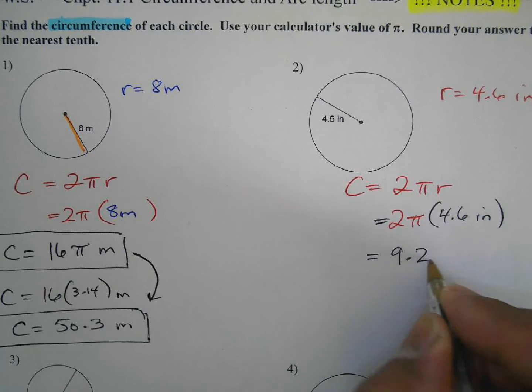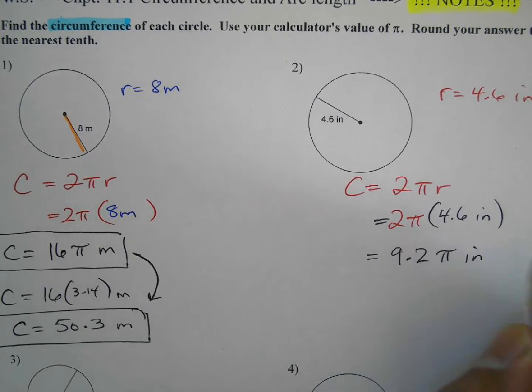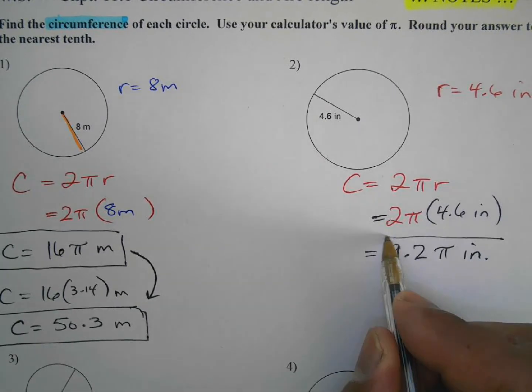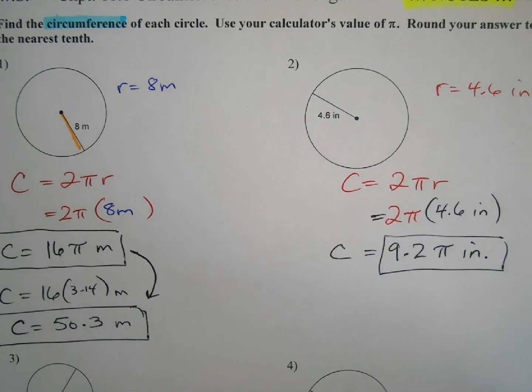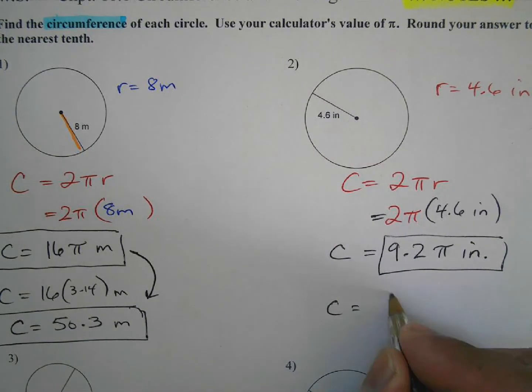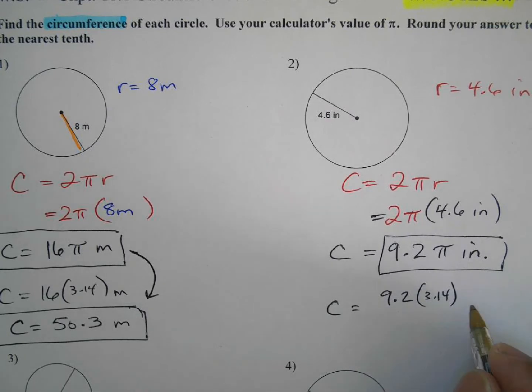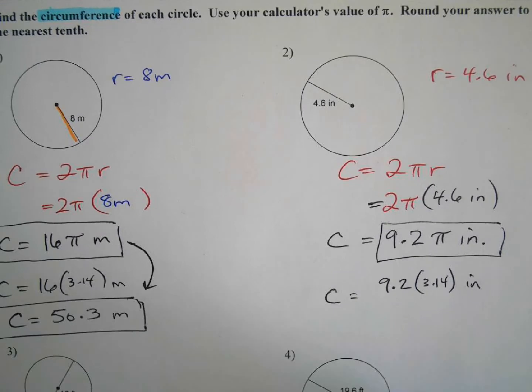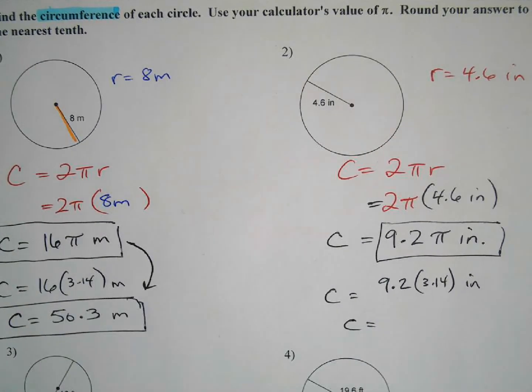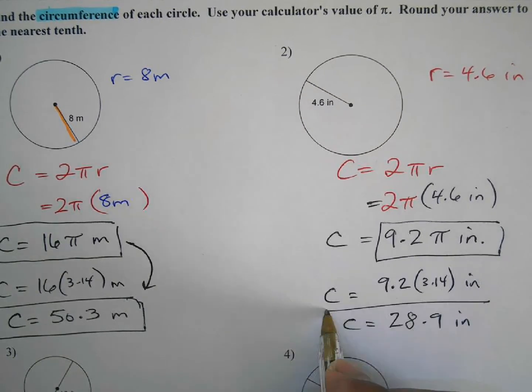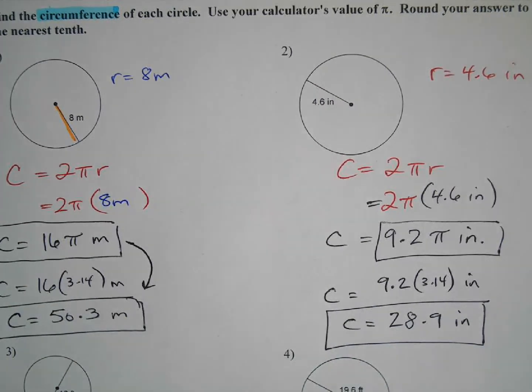This is the answer when you haven't multiplied the pi yet. This is one form of the answer for the circumference. But when I multiply the 9.2 and the value of pi in your calculator, I just push the button. It's 3.14. And when you do actually do this and get the exact value, you're going to get 28.9 inches. That's the circumference.